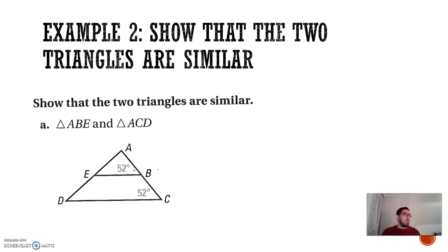All right, now, how can I show two triangles are similar? If here I have triangle ABE, and then I have ACD, these are the two triangles. I know that angle ABE and ACD are both 52 degrees. Now, you might be like, well, Mr. Hsu, I need two angles. Well, here's the thing.